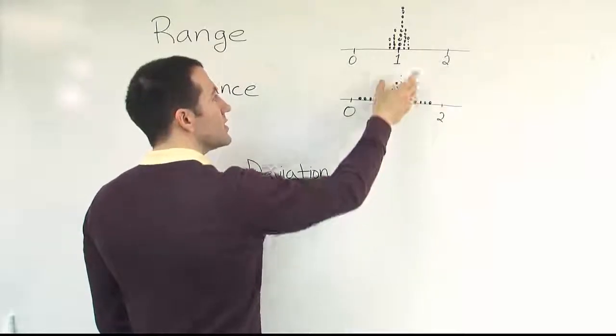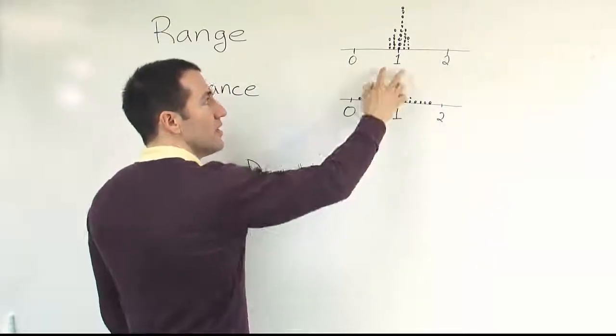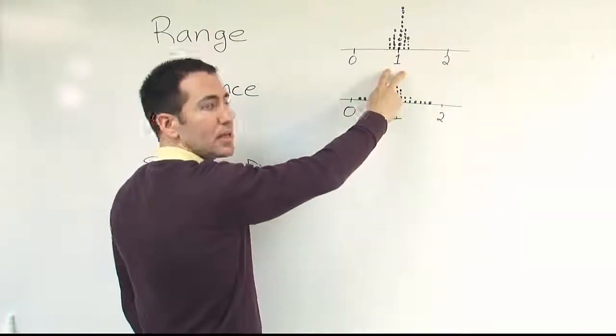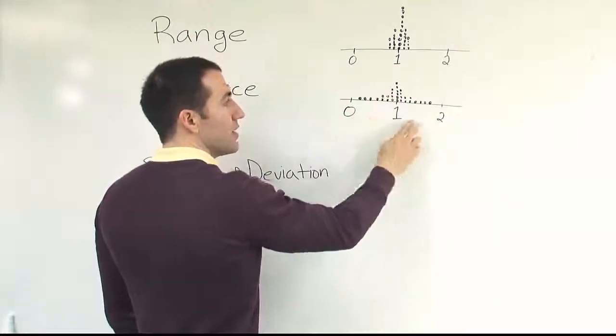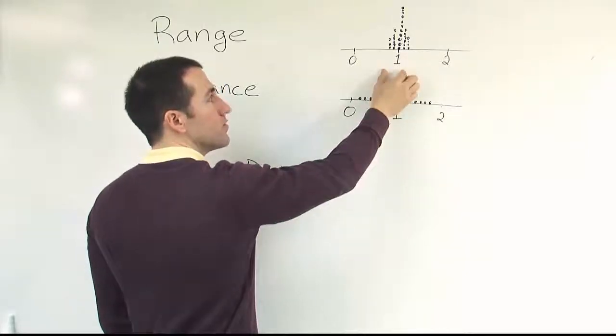So clearly, variation is an important concept. This factory having the same average as this one, this factory is still the better choice because it's more consistent, more reliable, more dependable. This one, too much variation. Lots of products perhaps may not be functionable that are coming off of the line. This is inefficient. This is much more efficient.